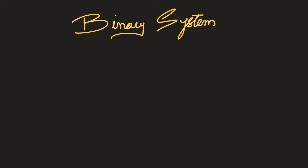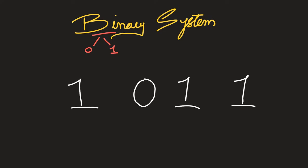Moving on to the binary number system — base 2 has only two possible digits, 0 and 1, as the name suggests. Let's consider the number 1011. Using the same method, this is base to the power of position, so the place values become 1, 2, 4, and 8.